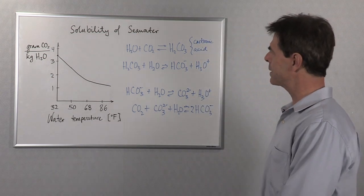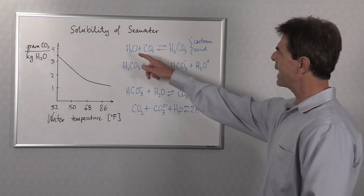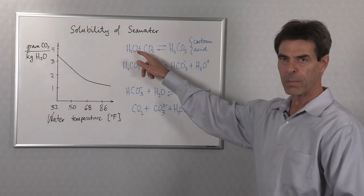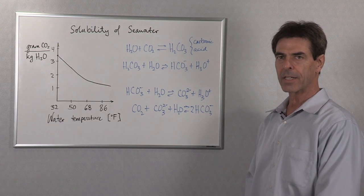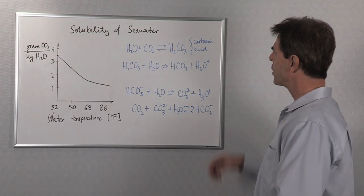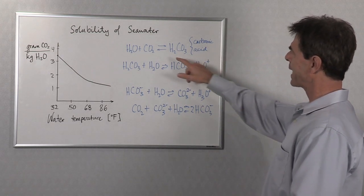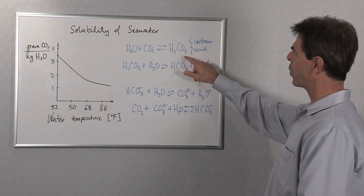And the way this happens is through a chemical process. H2O, that's a water molecule, interacts with CO2, that's a carbon dioxide molecule, to produce carbonic acid. That's H2CO3.